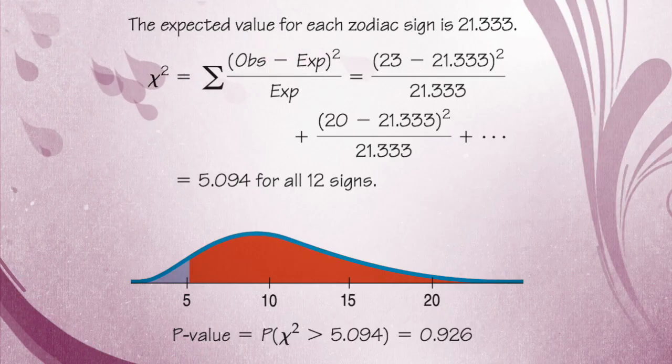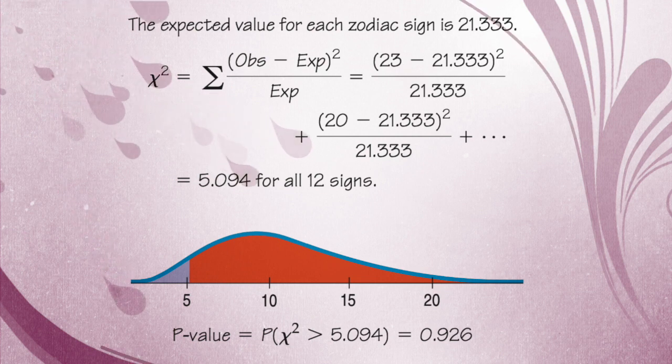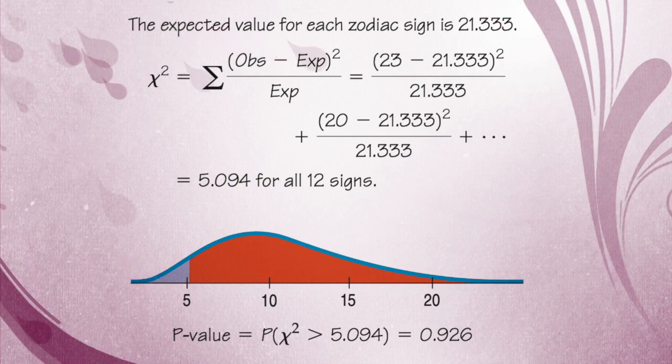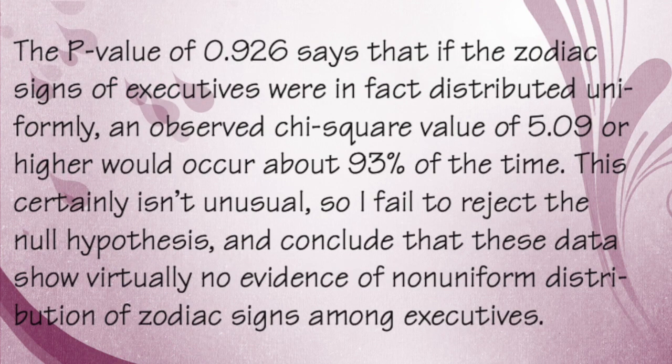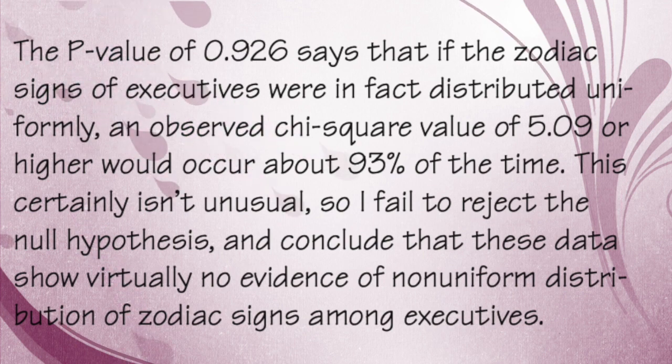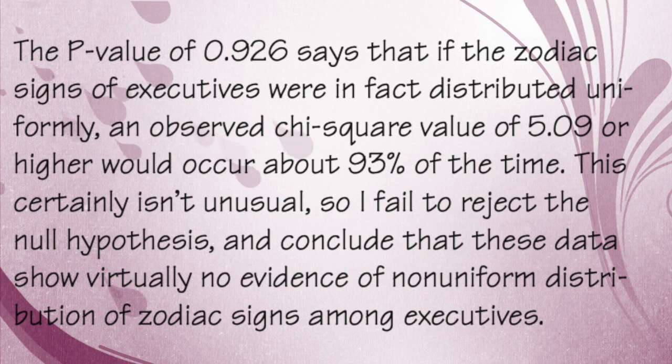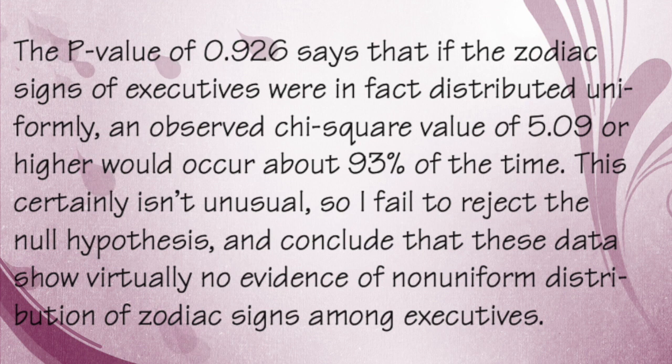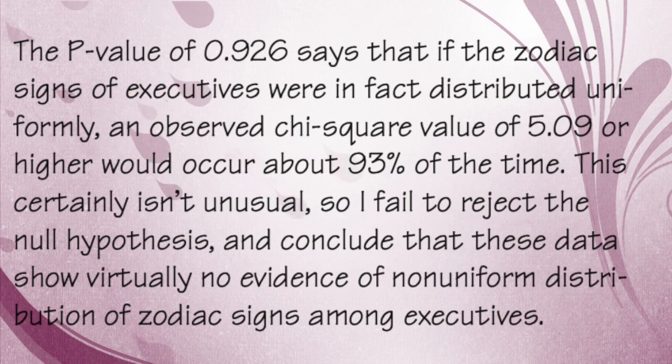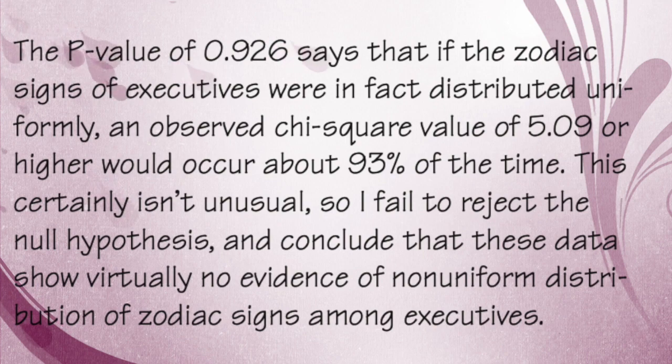And the p-value of 0.926 says that if the zodiac signs of executives were in fact distributed uniformly, an observed chi-squared value of 5.09 or higher would occur about 93% of the time. This certainly isn't unusual, so we failed to reject the null hypothesis, and conclude that these data show virtually no evidence of non-uniform distribution of zodiac signs among executives. So I hope this example was helpful for all of you, and we'll do a couple more in the second video.